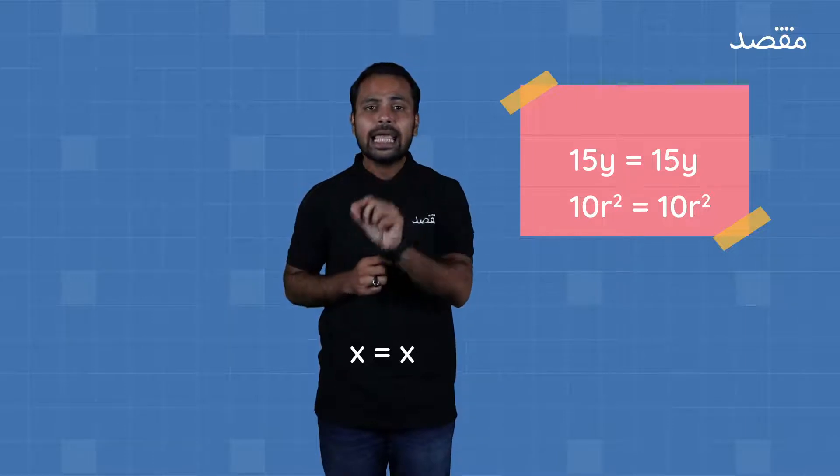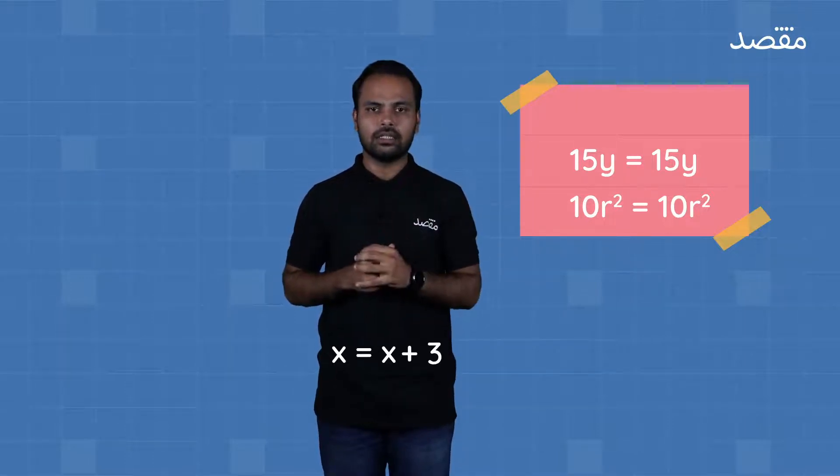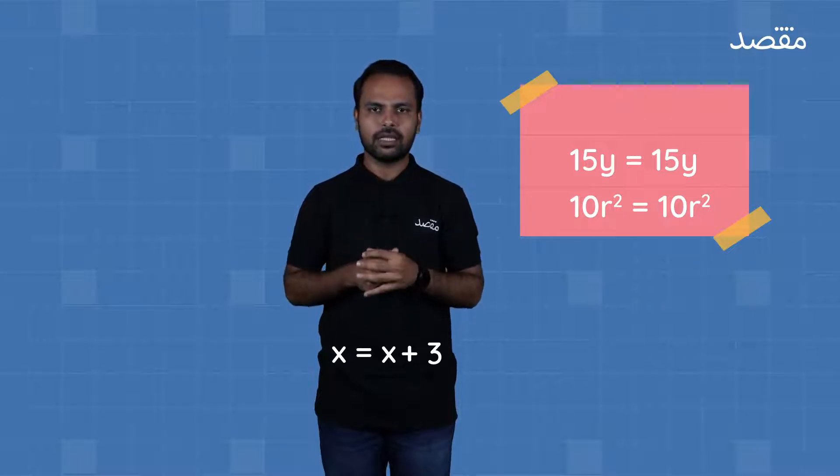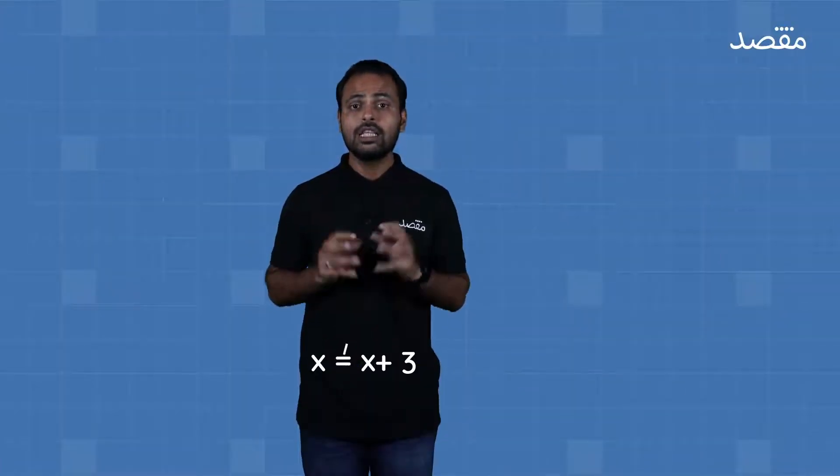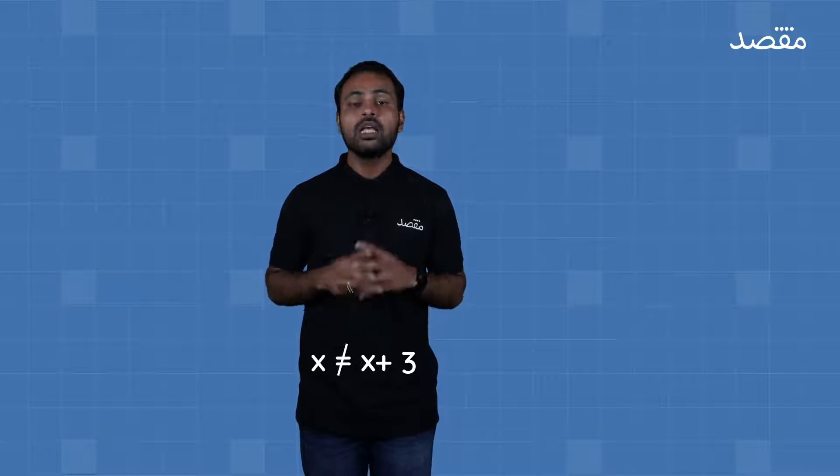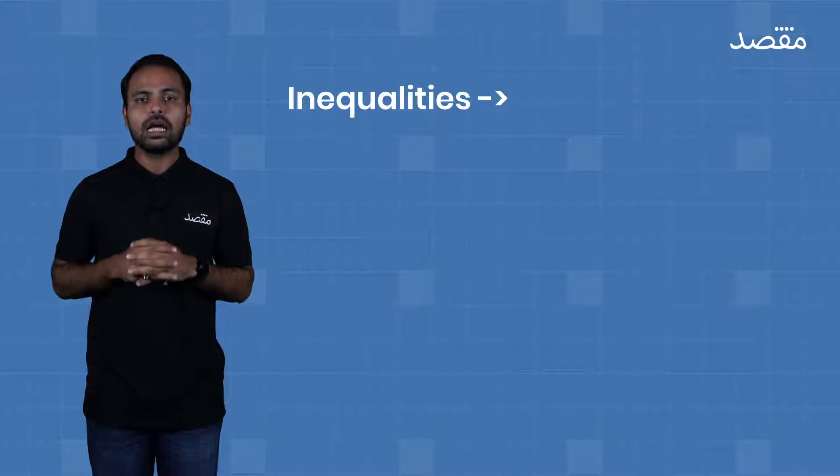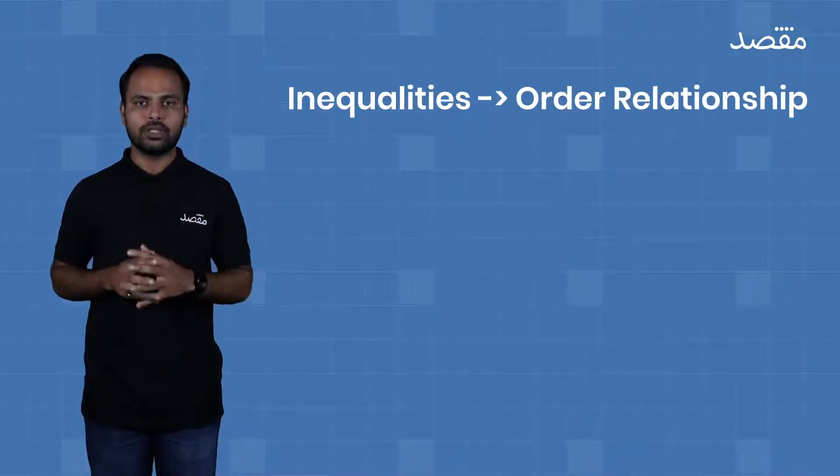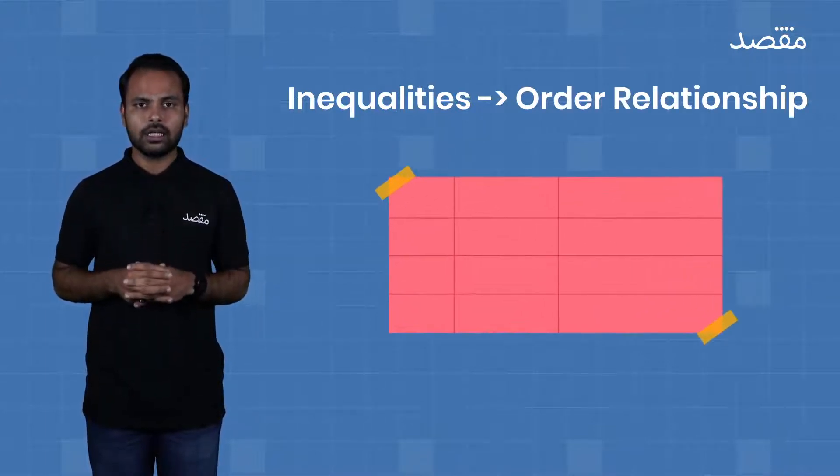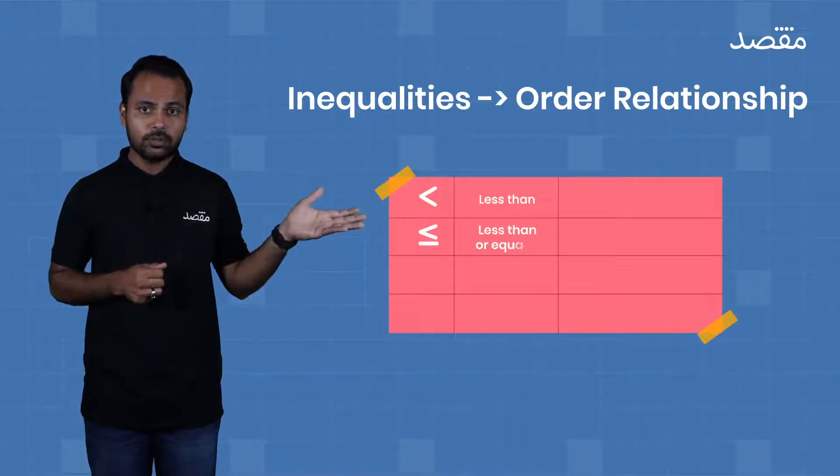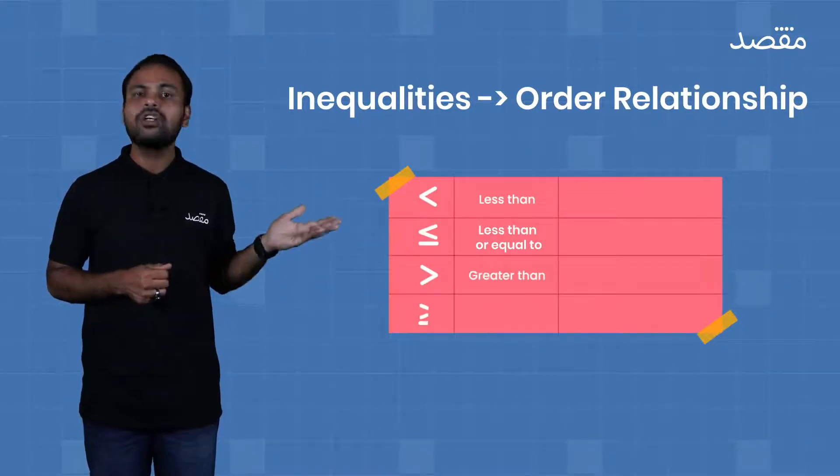But if I add 3 on one side, will both sides remain equal? What do you guys think? Yes, this won't remain equal. We are talking about inequalities. Inequalities are basically orders of relation. What can these be? These can be less than, less than equal to, greater than, or greater than equal to between any two numbers or algebraic expressions.